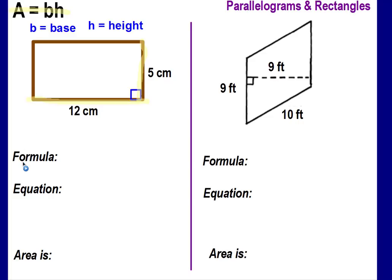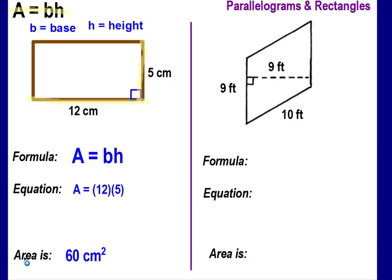The formula is area equals base times height. Remember, when there's no operation symbol between letters, it's automatically multiplication. We write an equation by rewriting the formula and plugging in the values we know. We don't know the area yet, but we do know the base and height. So our equation is area equals 12 times 5, and the area of this rectangle is 60.